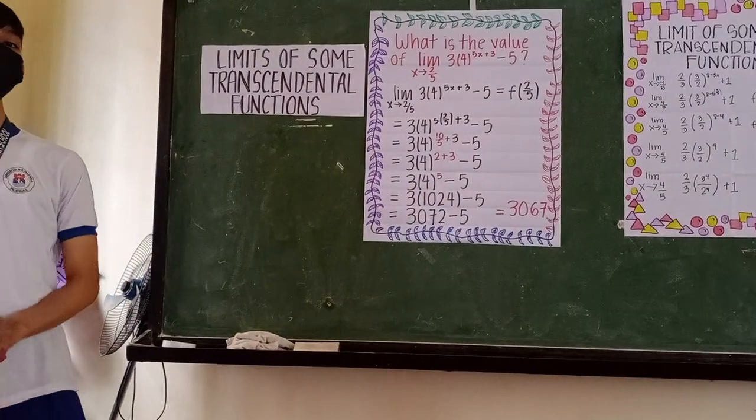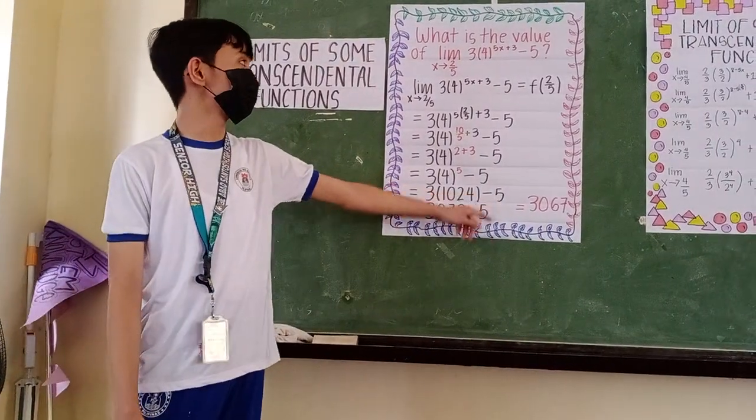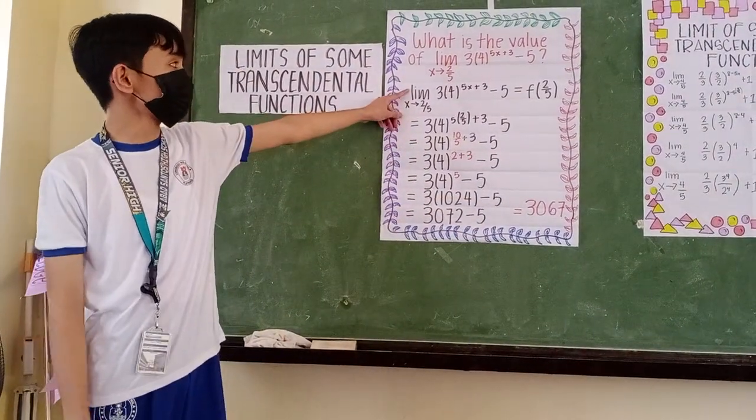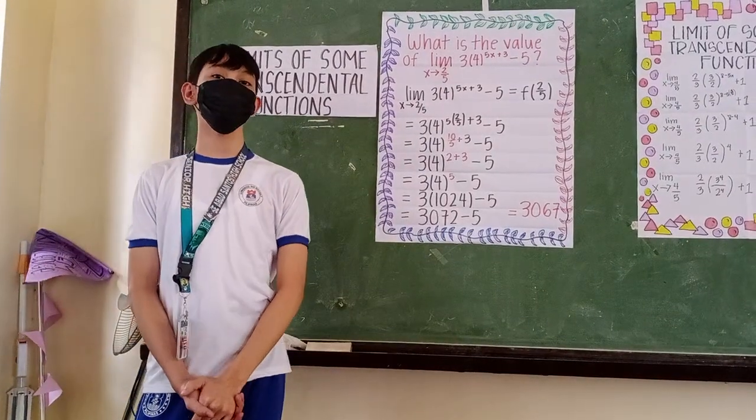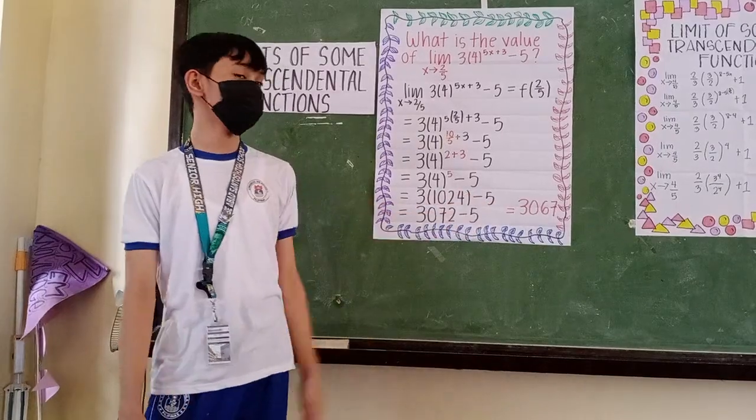So, our answer is 3,067. When you evaluate 3 times 4 raised to 5x plus 3 minus 5 as x approaches 2 over 5, it is equal to 3,067.